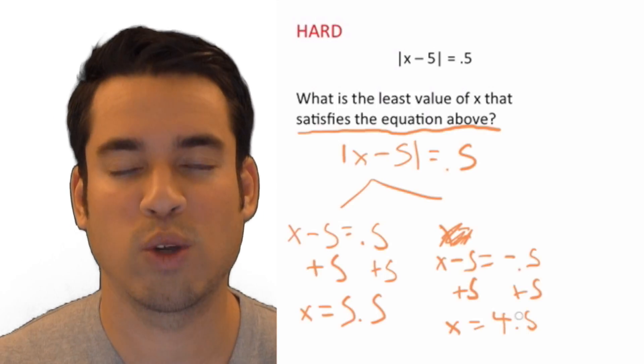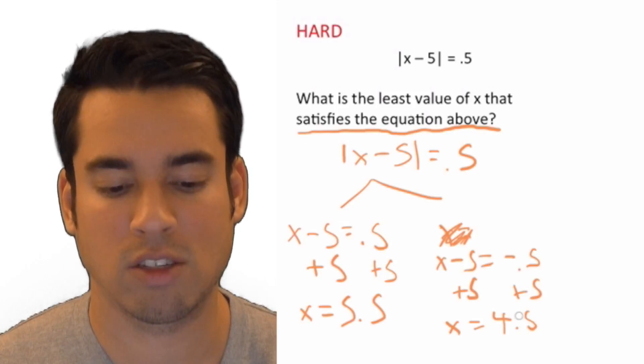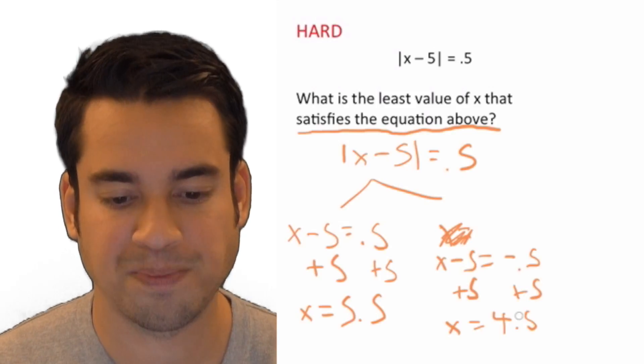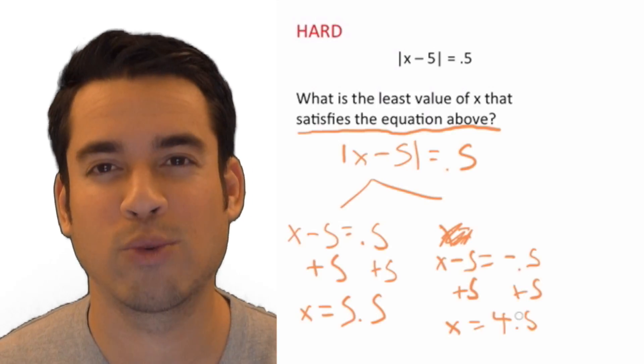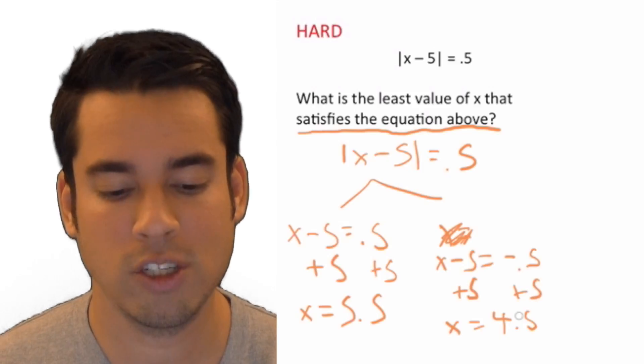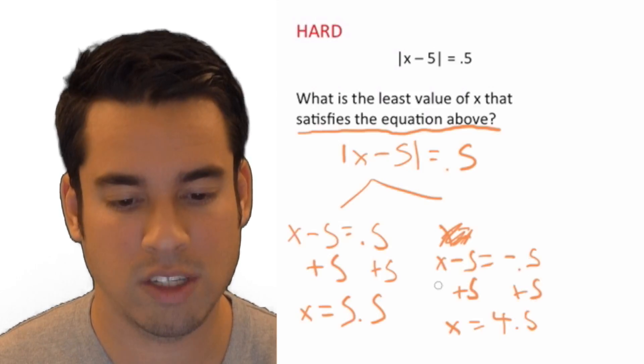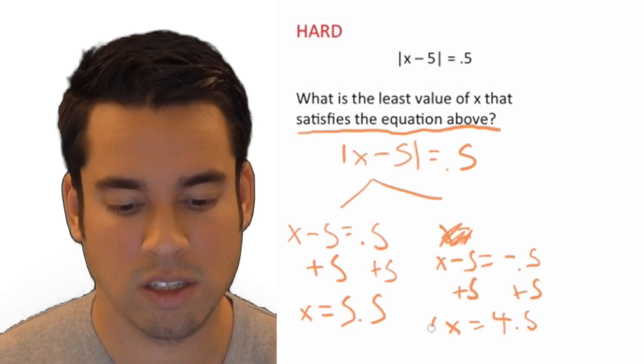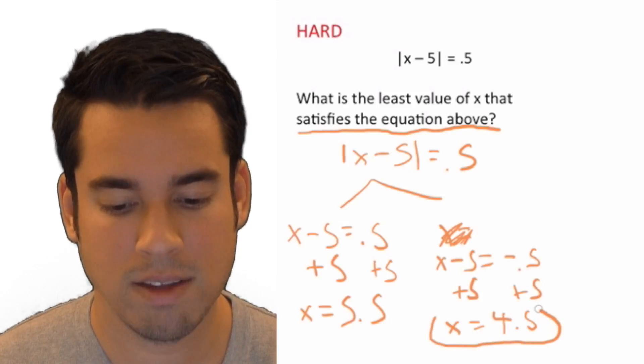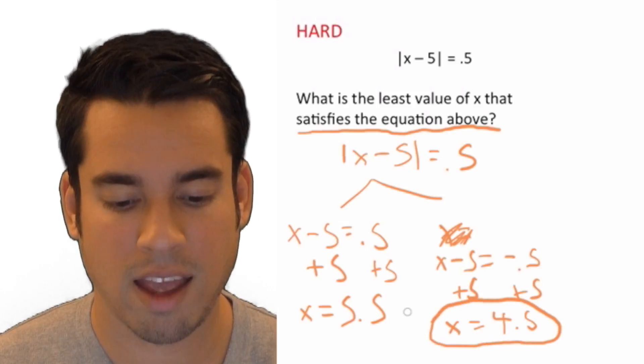So now this isn't a multiple choice question, it is a free response. So now you've got two values for x. You've got to figure out which one is the least value that is going to satisfy this equation. Well, it's the smaller of these two values. So this is 4.5 and done.